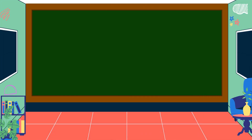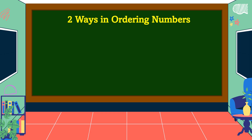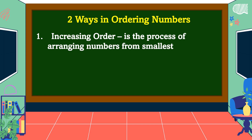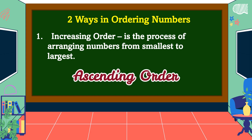Before we answer the problem, let's study the two ways of ordering numbers. The first one is increasing order. Increasing order is the process of arranging numbers from smallest to largest. Sometimes we call this ascending order.